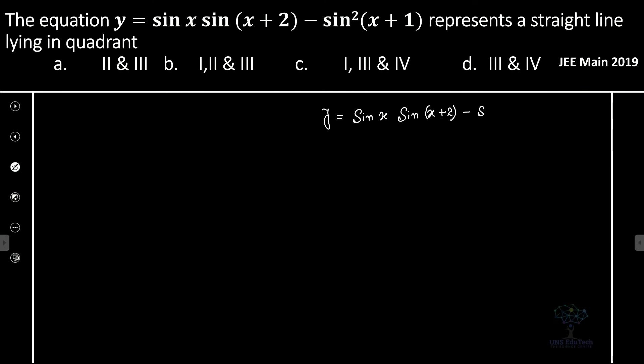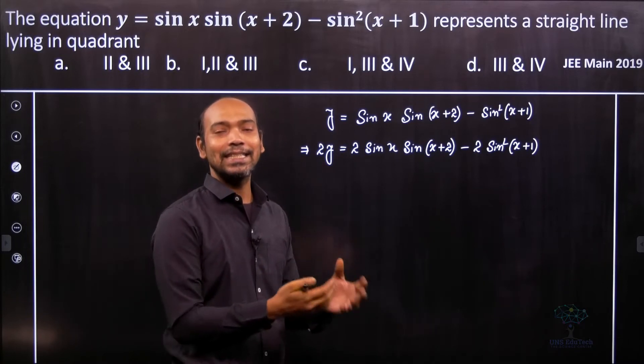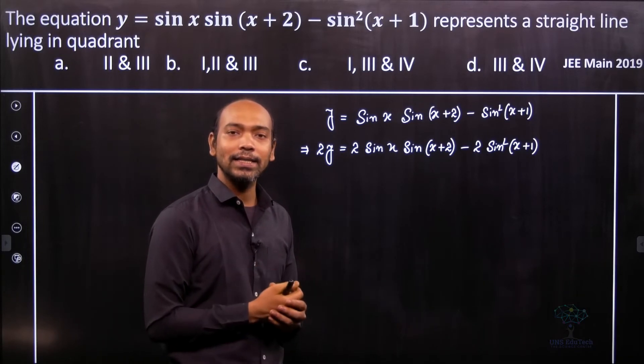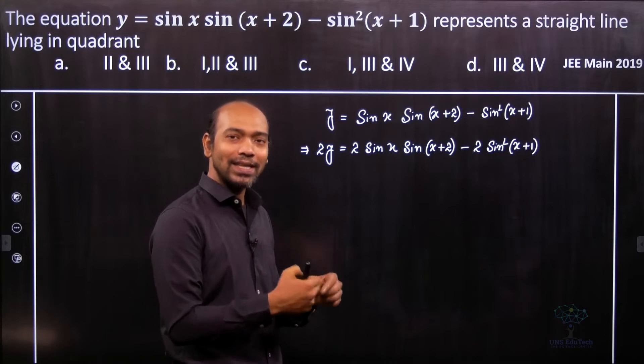Therefore, 2y equals 2 sin x sin(x + 2) minus 2 sin²(x + 1). Why multiply by 2? Because we know the formula 2 sin a sin b, which is cos(a - b) minus cos(a + b).